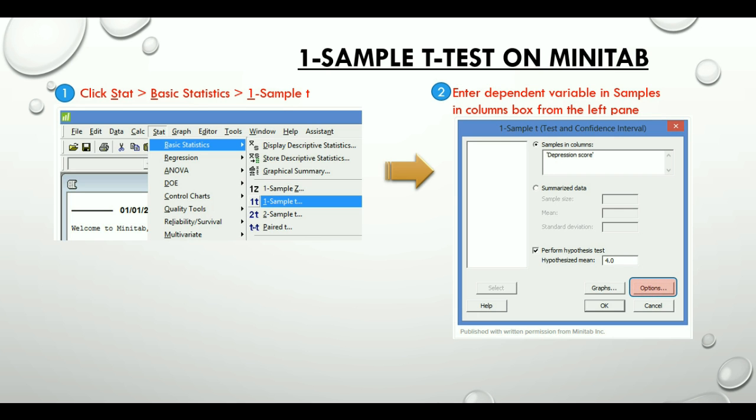Another option to see here is the summarized data. If you do not have the detailed data points and only have the summarized data values, you can still conduct a 1 sample t-test by putting them here instead of using the samples in column box.